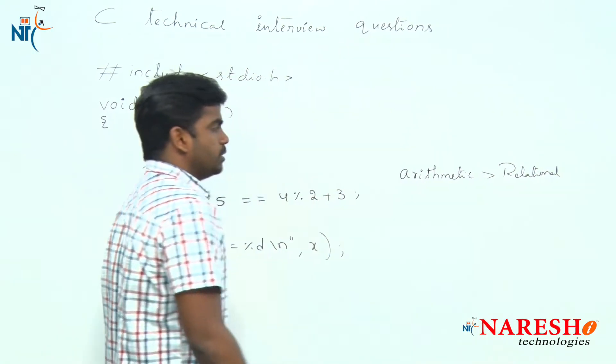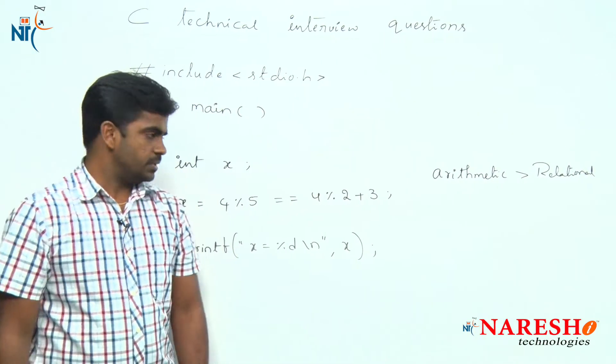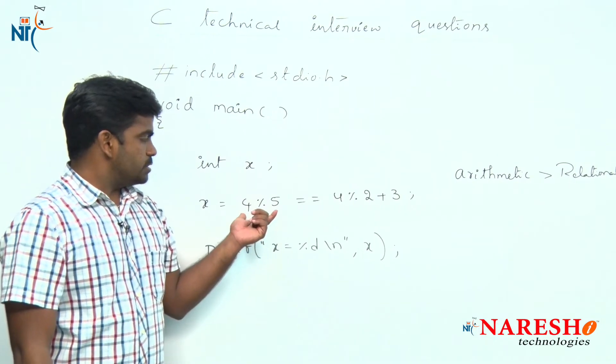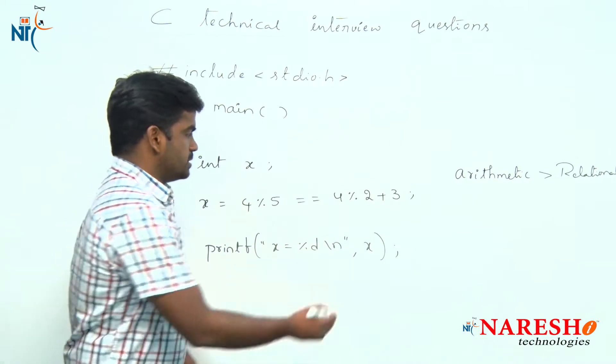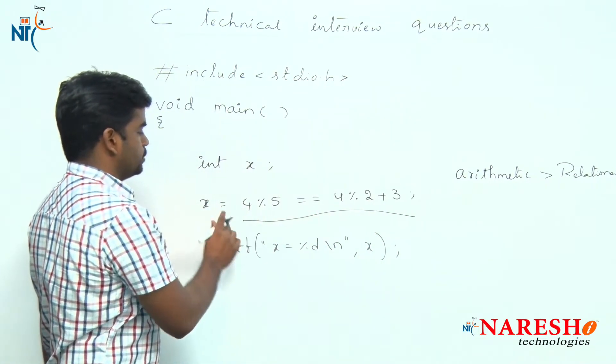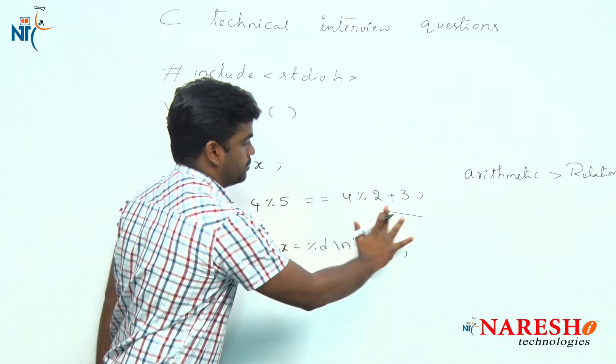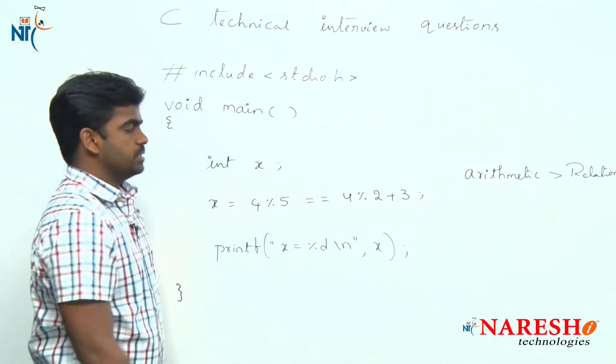First arithmetic operators execute. Here is the first expression and this is another expression. The first expression executes and the final value will be stored into this x. The final value will be stored into this x.